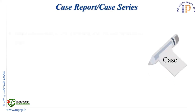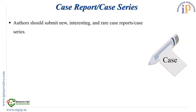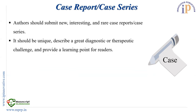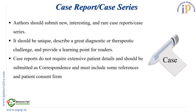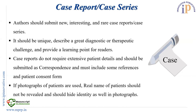The next type of article is the case series or case report. Always new cases should be presented — they should be interesting, unique, describe a great diagnostic or therapeutic challenge, and provide a learning point for readers. Cases with clinical significance or implications will be given priority. Case reports do not require extensive patient details and should be submitted as correspondence. The real name of the patients should not be revealed, and as an author it is an important duty to hide the identity of the patient if photographs are attached in the paper.